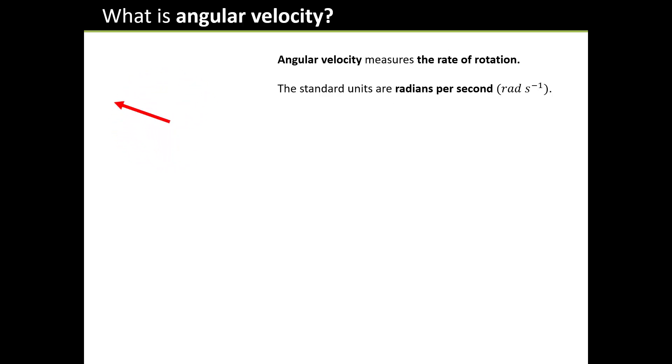So let's move on with circular motion. The big idea that lies behind all of this is the notion of angular velocity. Angular velocity is just a posh way of saying the rate at which something goes round and round. The units in which we measure angular velocity are radians per second. Let's see how fast this red arrow is going.